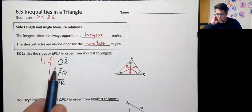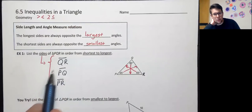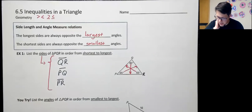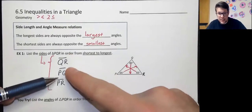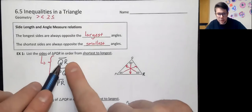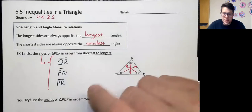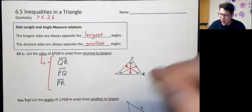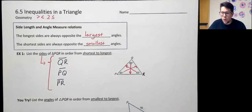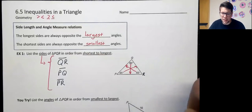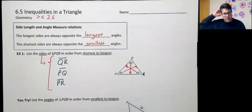Our largest angle — 80 degrees — is opposite our longest side, which is PR. The order of the letters doesn't really matter; the order of the sides does. We're always going to go from the smallest to the biggest, to stay consistent. We'll always go from the smallest thing to the biggest thing, just to make sure it's nice and consistent for you.